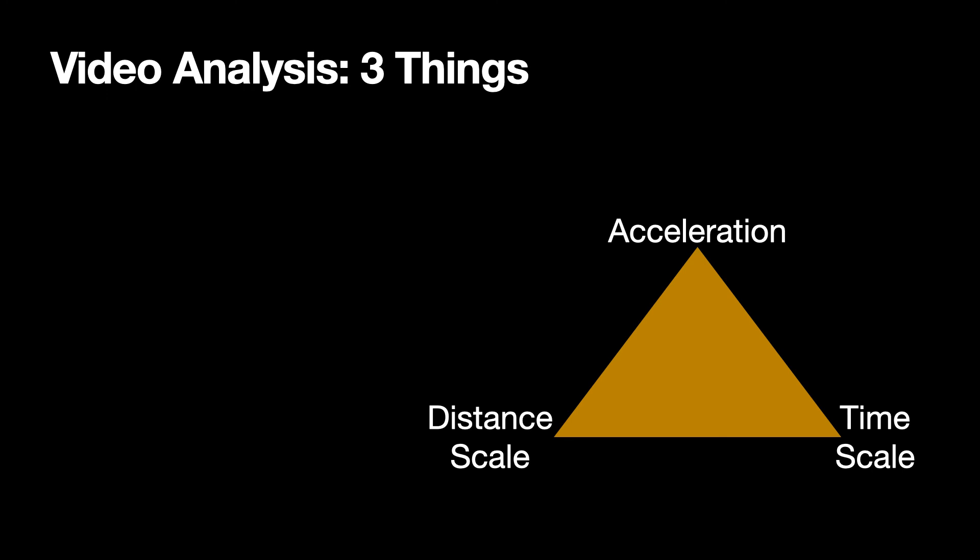Okay. So if I have an object moving vertically, then there are three things in the video. There is the acceleration. There is the vertical acceleration. There is the scale of the video. And then there is the time scale, right? The frame rate. Because I could record it at 30 frames per second and play it back at 60 frames per second. And it would be the playback that I would really care about.